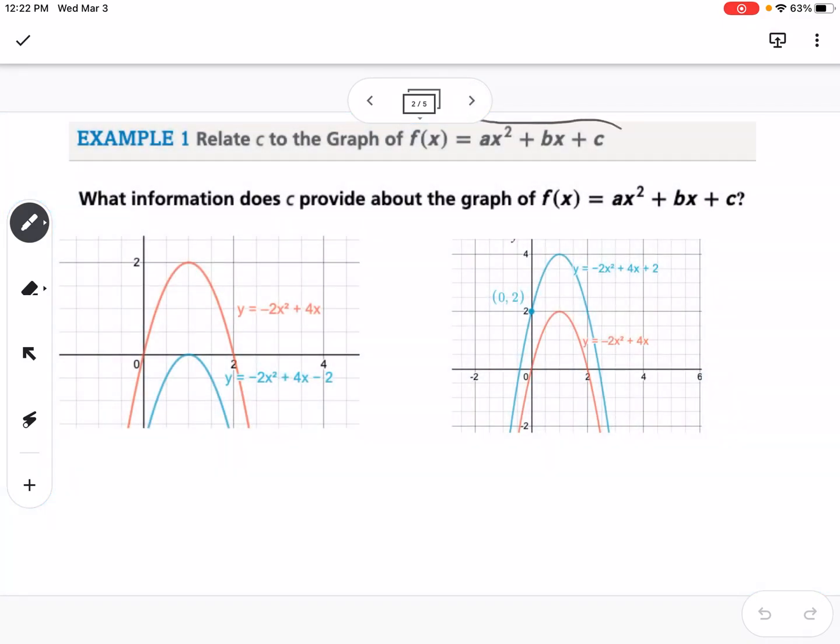You can see up here, this is standard form of a quadratic. So instead of our a, h, and k that we saw in vertex form, it's f(x) = ax² + bx + c. The a value does the same thing in both standard form and vertex form. So it tells us if it opens up or down, tells us if it's wide or narrow.